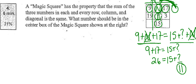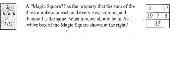Let's check to see if that works. If I put 11 in here, I know 19 plus 11 is 30, plus 3 is 33. So every single direction has to equal 33. If I do 15 plus 11, I have 26; 26 plus 7 is 33. And 9 plus 7 is 16; 16 plus 17 is 33.